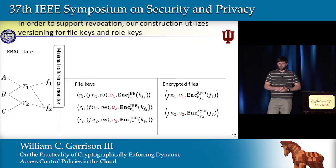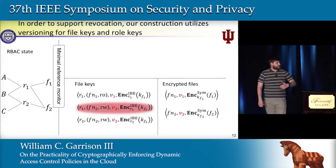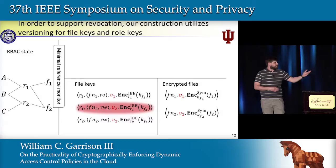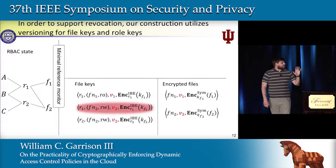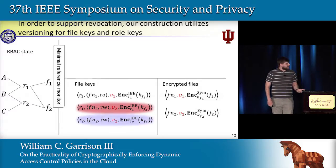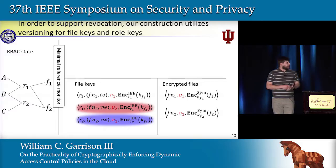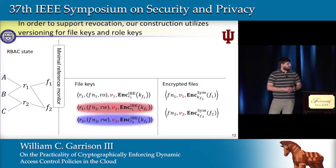For instance, if I wanted to revoke role 1's access to file 2, this is the tuple I'd want to delete—but deleting it isn't good enough. The user could be storing the contents of the key and can continue to download and decrypt this file as it changes in the future. So instead, we're going to purge that and then re-key the file, replacing this copy of the file key for role 2 so that role 2 can continue to access, but role 1 no longer does.